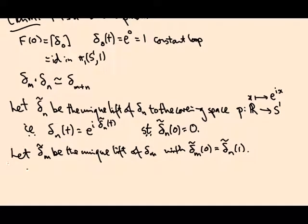So now, the claim is delta m dot delta n is exp i delta m tilde dot delta n tilde. In other words, the concatenation of these lifts upstairs is a lift of delta m.